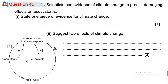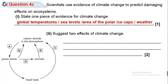Question 4C. Scientists use evidence of climate change to predict damaging effects on ecosystems. 4C1: State one piece of evidence for climate change. Climate change is a significant variation of weather conditions — becoming warmer, wetter, or drier over a long period of time. Evidence includes global warming, rising sea levels, shrinking polar ice caps, and varying weather conditions.